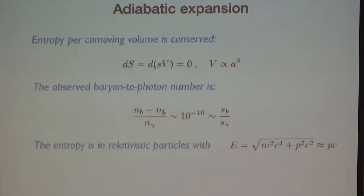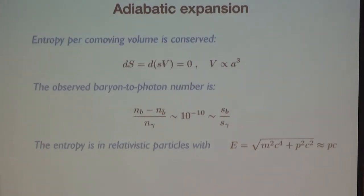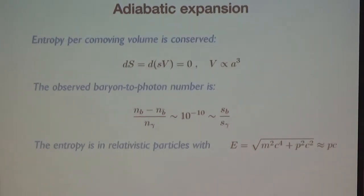The entropy in baryons should be proportional to the number density of baryons, and the entropy in photons proportional to the number density of photons. So the ratio of entropy in baryons to entropy in photons equals 10⁻¹⁰. This tells us that all the entropy is in photons or basically relativistic particles. The number of photons depends on temperature — you're always close to local thermal equilibrium, so it's given by the Stefan–Boltzmann law, going like T³. I will show that the temperature goes down like 1/a, the same way as the number density of baryons. That's what makes this ratio constant.